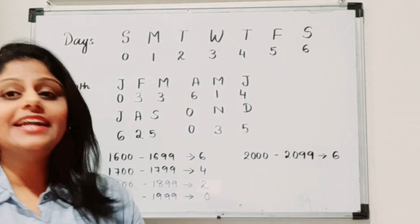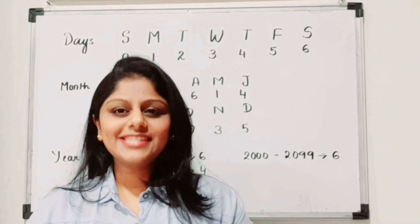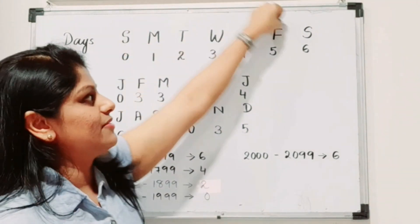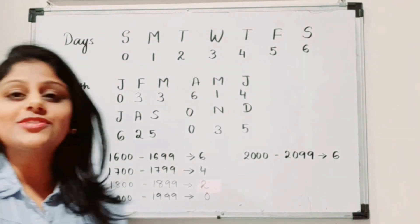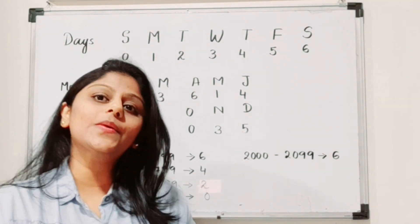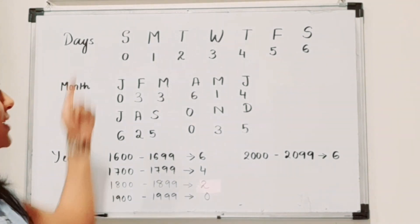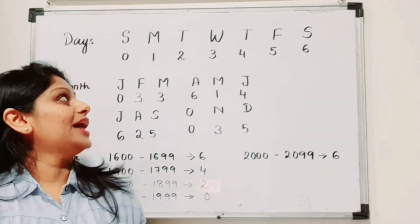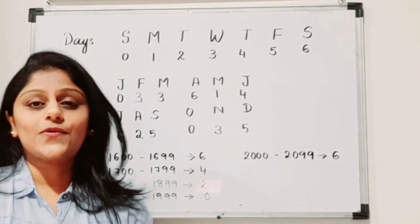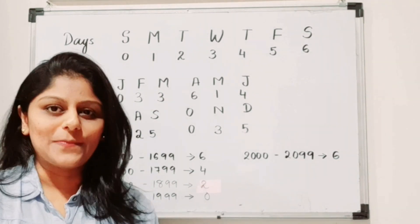First let's see the day codes. We have Sunday through Saturday. You simply number them from 0 to 6: Sunday is 0, Monday is 1, Tuesday is 2, Wednesday is 3, Thursday is 4, Friday is 5, and Saturday is 6. You can pause the video and take a screenshot of this.